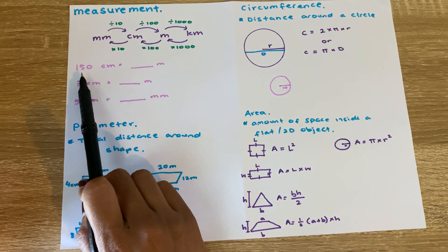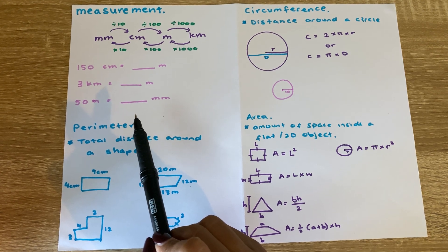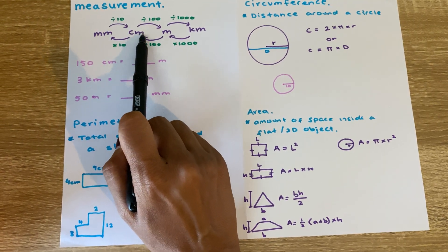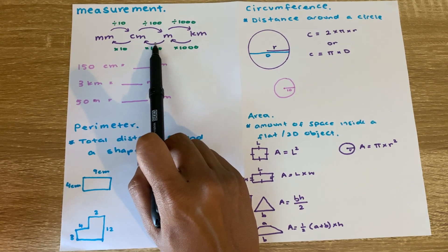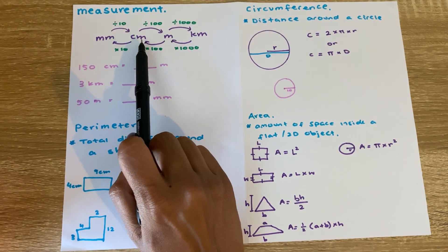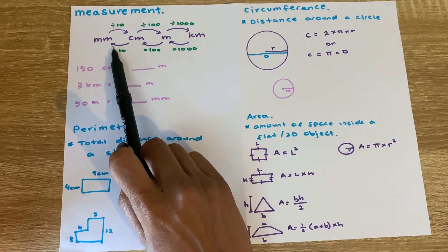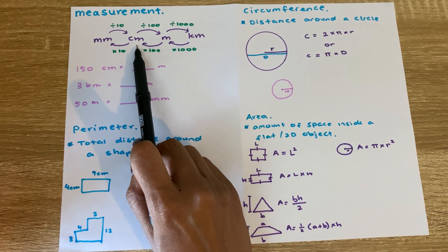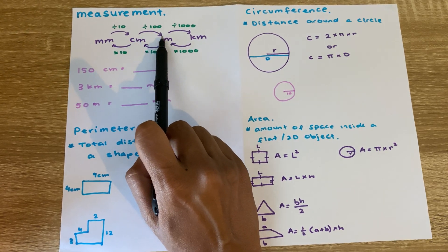Say I've been told that something is 150 centimeters and I want to figure out how much that is in meters. I can use this little chart here, which shows us that in one centimeter there are 10 millimeters, in one meter there are 100 centimeters, and in one kilometer there are 1,000 meters. To convert from meters to centimeters to kilometers we're usually dividing, and to convert the other way we're multiplying.